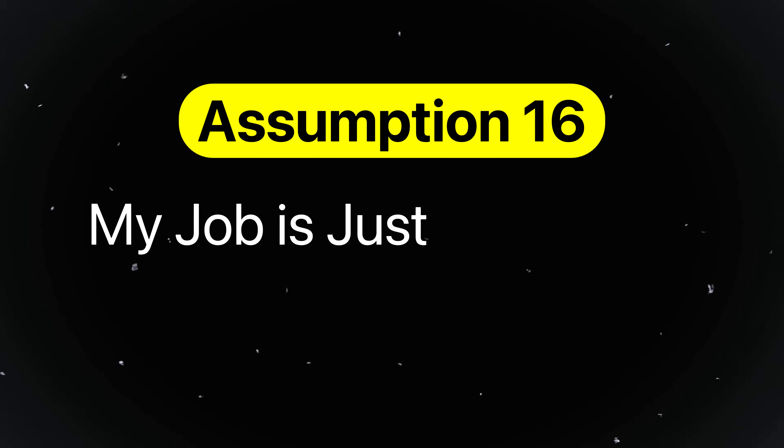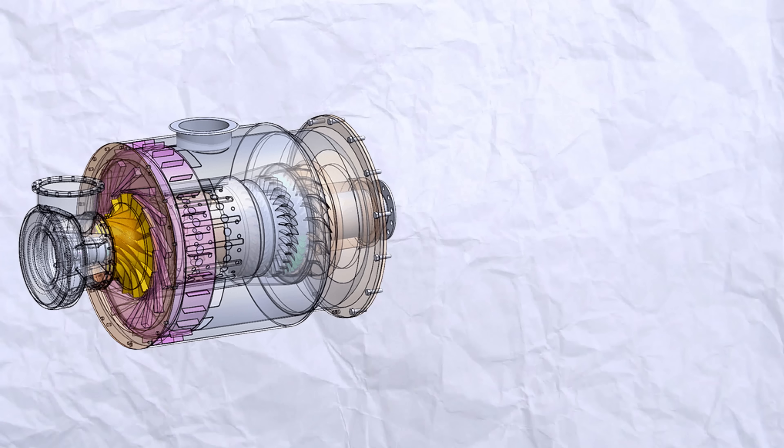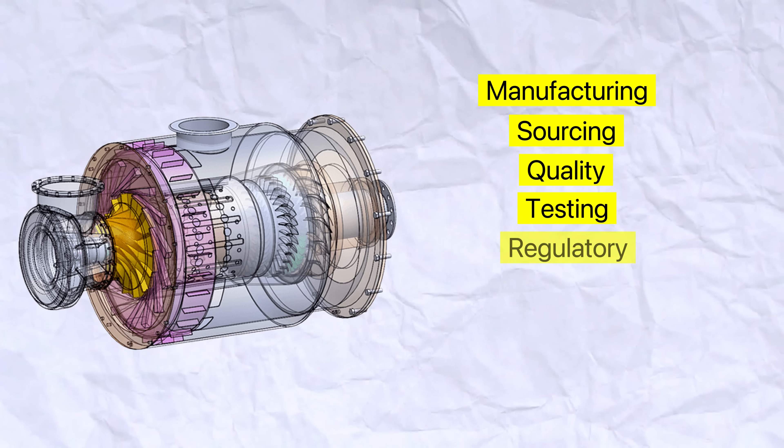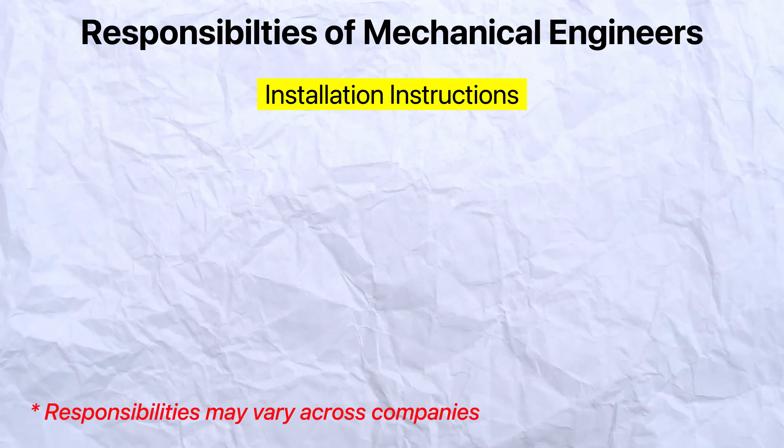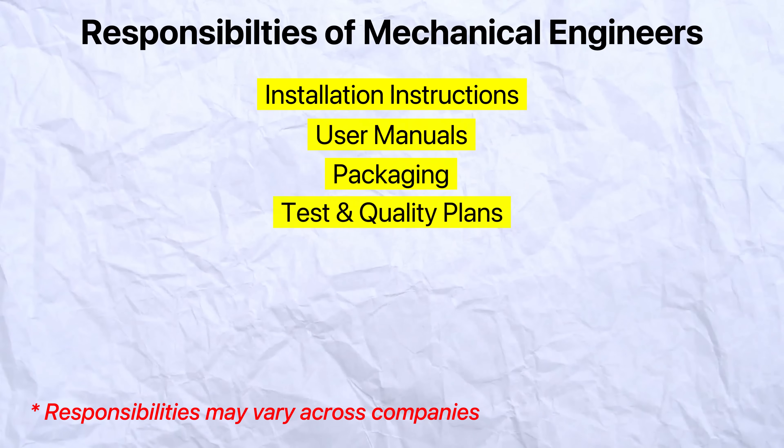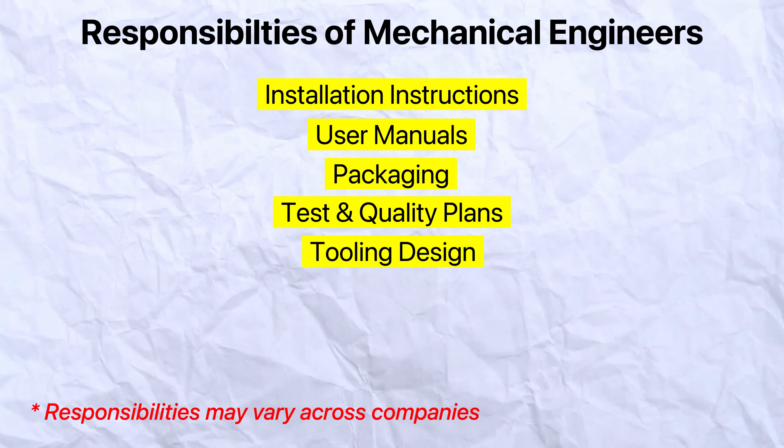Assumption number sixteen is my job is just the design. It's easy to think that your responsibility is solely design and ends once CAD models are clean, drawings get released, and parts get made. But the design requires alignment across manufacturing, sourcing, quality, testing, regulatory, marketing, and even legal. You'll be working with all of them to get the design and product ready for launch — including installation instructions, user manuals, packaging, test and quality plans, collaborating with manufacturing engineers on tooling design, and getting parts and drawings approved. Good design is about the entire system and the bigger picture. Understanding who comes next and making their job easier is what truly makes you an effective engineer.